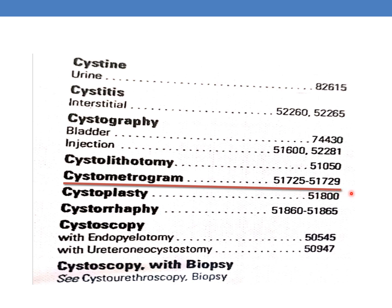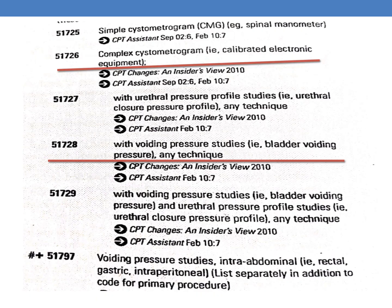Immediately, you have to go to that particular code page. If you see, here we are getting the series 51725–51729. In the question, the patient underwent a complex cystometrogram. Here you have two CPTs — one for simple and one for complex.